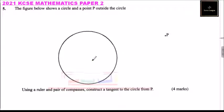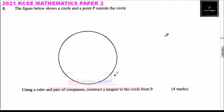To do this we need to locate the center of the circle. After we locate the center of the circle, we join the center with P. We bisect that line and we make two arcs where we would be able to draw the tangent.